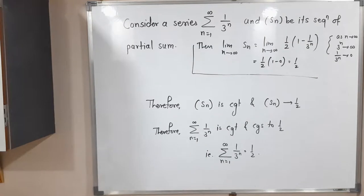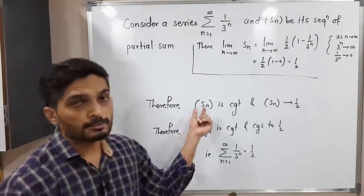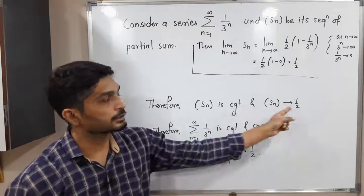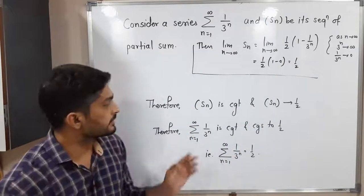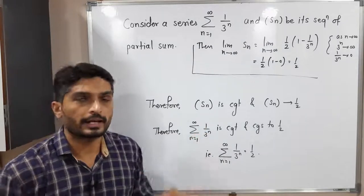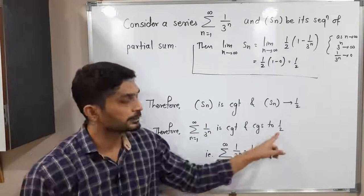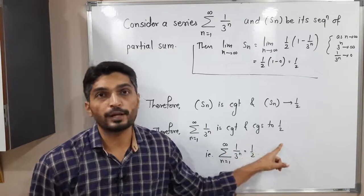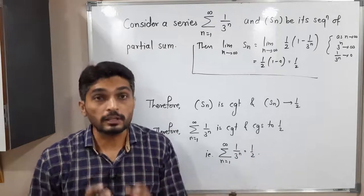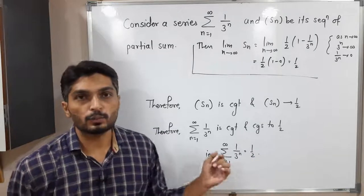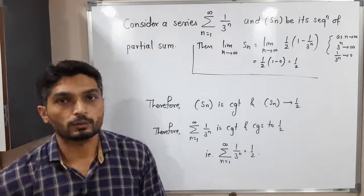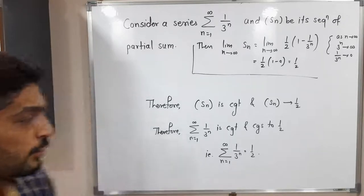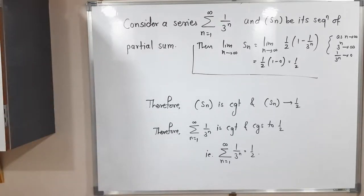In conclusion, the sequence of partial sums Sn is convergent and converges to 1/2. Therefore, the corresponding series summation 1 upon 3 raised to n is also convergent and converges to the same point 1/2. We can write: summation of 1/3^n = 1/2.